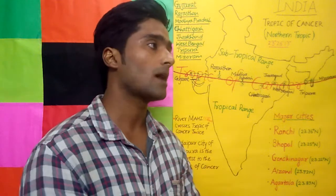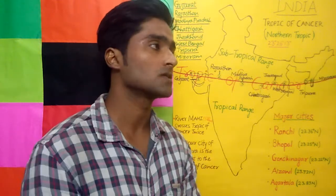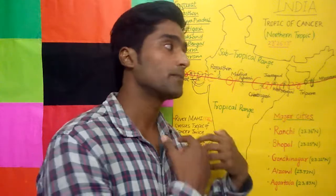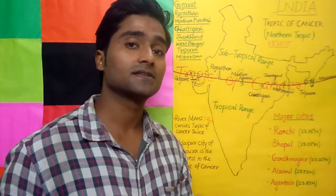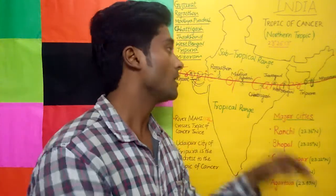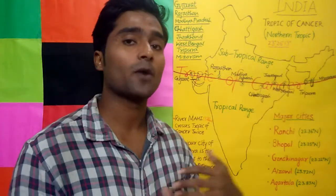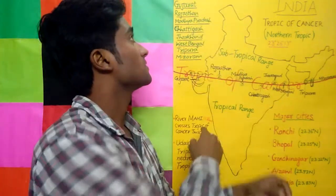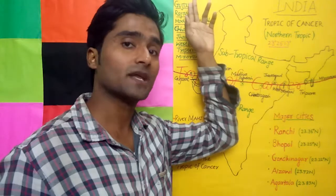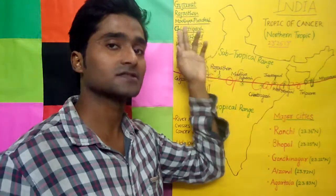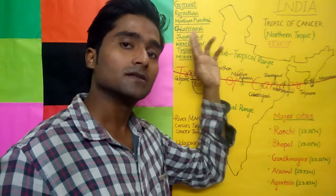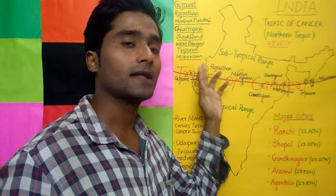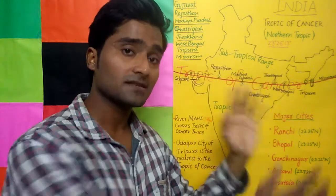Friends, the question may come in the examination asking what states the Tropic of Cancer passes through. So these are the eight states: Gujarat, Rajasthan, Madhya Pradesh, Chhattisgarh, Jharkhand, West Bengal, Tripura, and Mizoram.